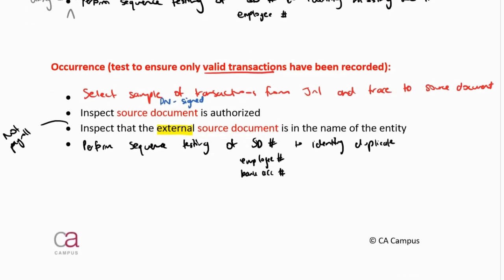For occurrence, selecting a sample of transactions from the journal — the journal would be in the system — so using CAATs, select a sample of transactions, and then I will physically trace it to the source document. The sentence continues as is; it just needs to state that initially I will use CAATs to select the sample. Inspecting that a source document is authorized cannot use CAATs — that is a human function. I will leave that, along with inspecting it's in the name of the entity. Once I've selected my sample using CAATs and got the source documents, I will still add these procedures down without amending them to include a CAATs element.